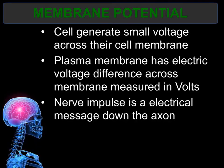Potential is the difference in charge between the outside and the inside of a nerve cell, caused by a difference in the ions — specifically sodium, chloride, and potassium — that are in the cell.